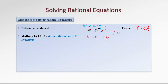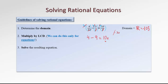The next step is just to solve the polynomial equation. In this particular case, we have a linear equation, so it shouldn't be any trouble. 4 minus 9 is negative 5, equals 10x. Then we divide the whole equation by 10, so x equals negative 5 over 10. Rewriting with x on the left and simplifying, 5 tenths becomes 1 half. So x is negative 1 half.